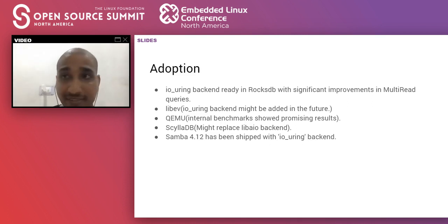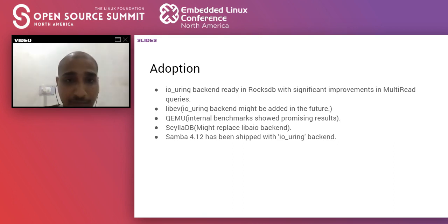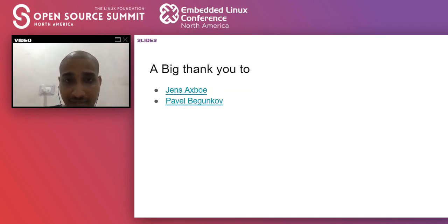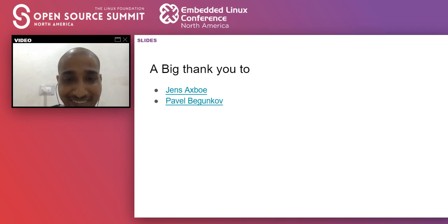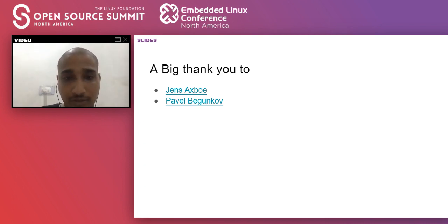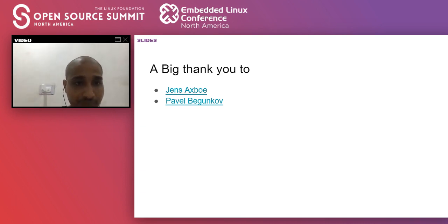In terms of adoption, RocksDB is using IOUring in its backend with significant improvements in multi-read queries. LibEV, a library for applications leveraging the event loop, may also use IOUring as a backend. A big thank you to reviewers who reviewed the slides and helped improve the content — including Jens, the author of the interface. Slides will be shared on the ELC website.